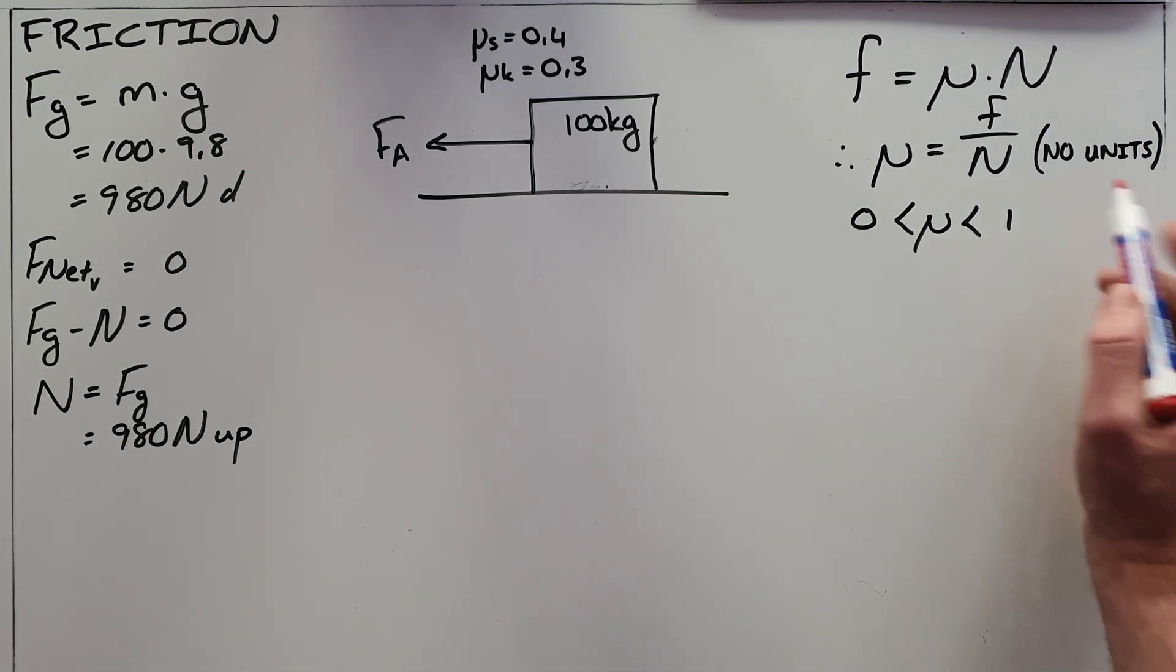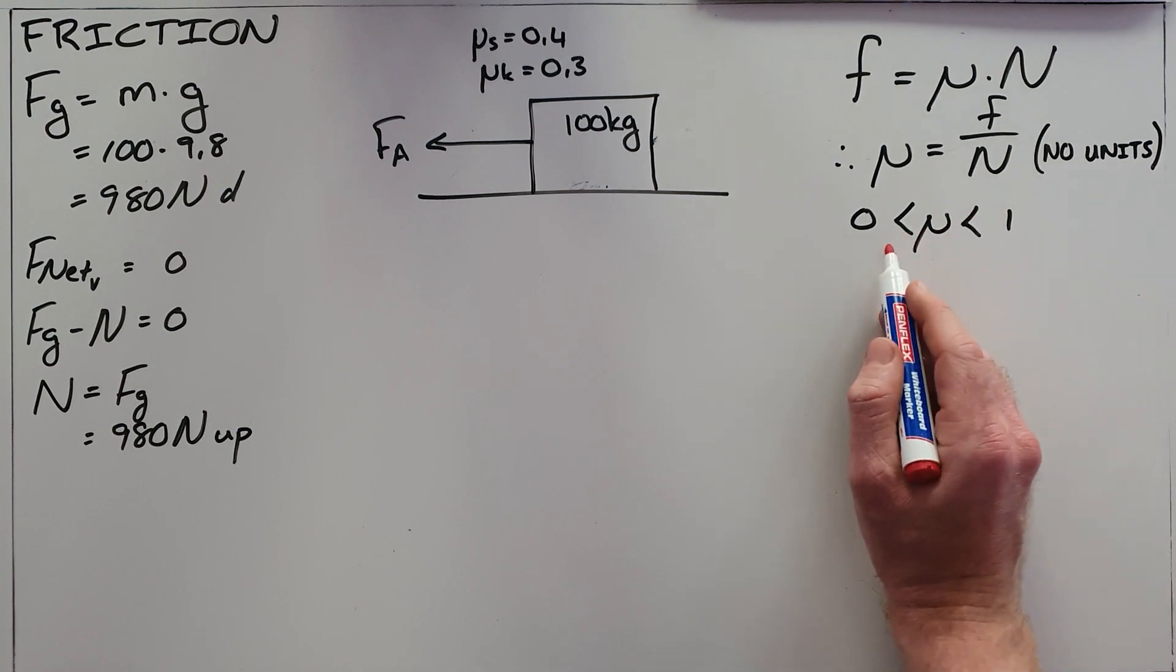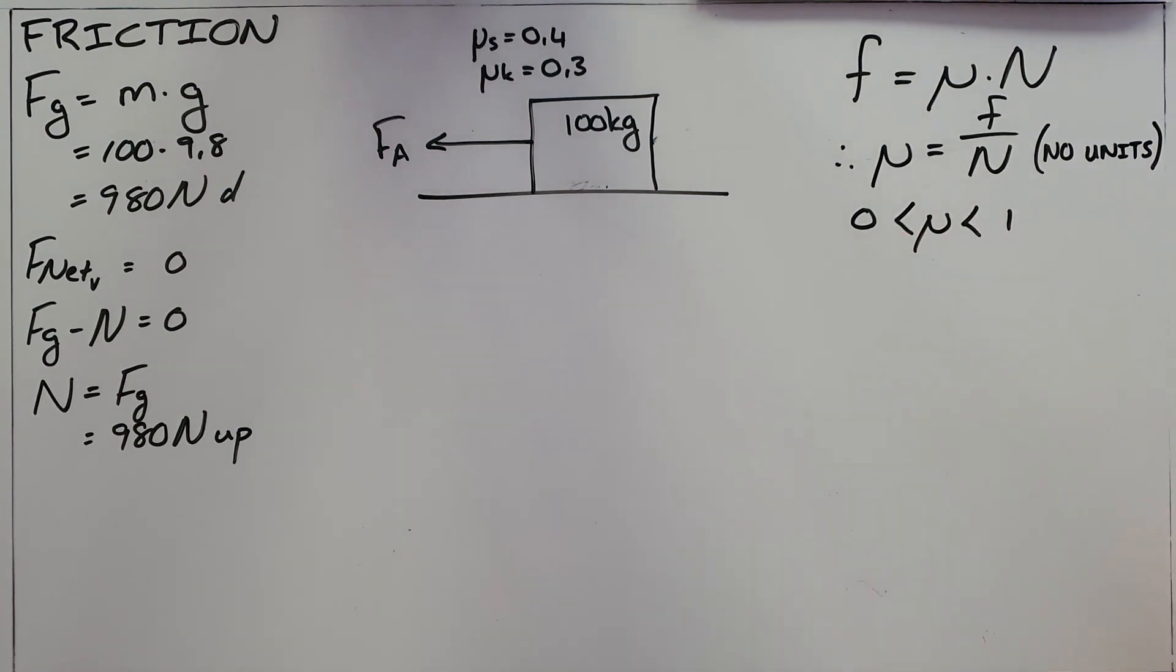Since it is a ratio it will not have any units and the values for this coefficient of friction are typically between zero and one.